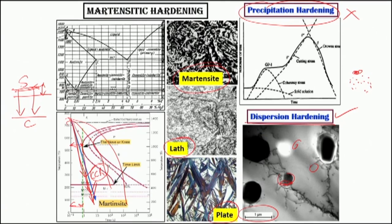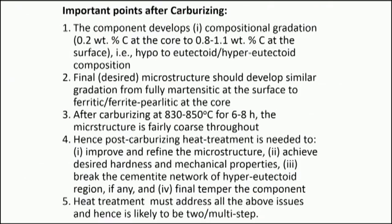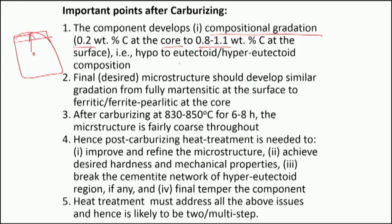The right side is for nitriding and the other column is for carburizing. We need to review the situation as to what happens after carburizing — what is the state after carburizing. First, we have developed a compositional gradation which can easily range from 0.2 weight percent to about 0.8 or even 1.1 weight percent of carbon at the surface — from the core to the surface, at the top layer we have a gradation of composition.